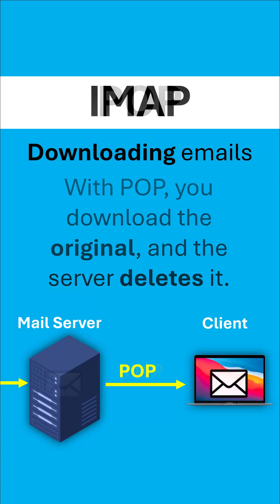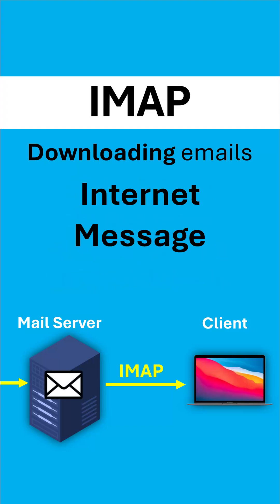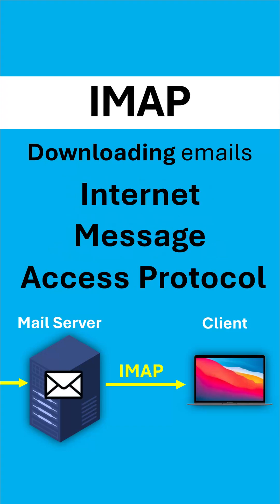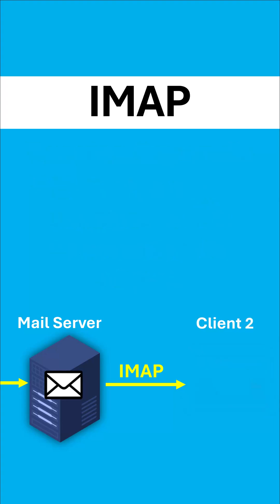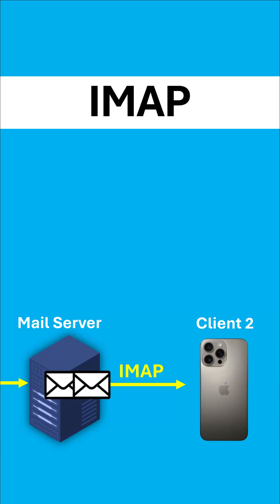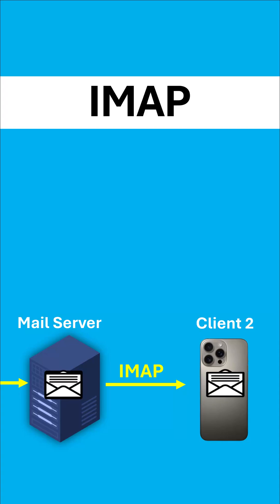And this compares with IMAP, which stands for Internet Message Access Protocol. IMAP only gives you a copy of the email, so the actual original is kept on the server. This means if I, a bit later, use a different device to access my emails, I can still access this email because it's still on the server. IMAP also keeps the server and client in sync, so if I read the email, this would also be communicated with the server as well.